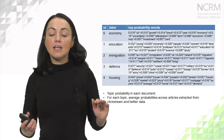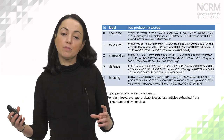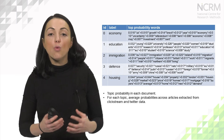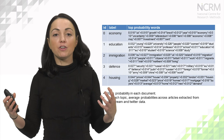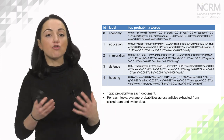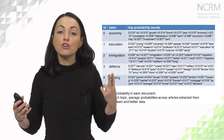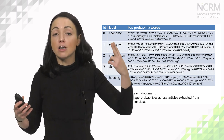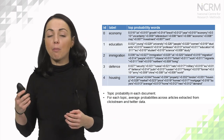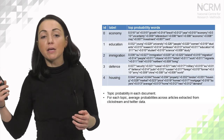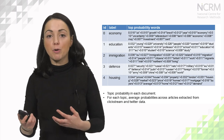We compute topic probabilities for each document and then for each topic we average those probabilities across documents — across the articles extracted from the clickstream and the Twitter data. We end up with two numbers: an average probability of a topic (say, the economy) in the clickstream data, and an average probability of the same topic in the Twitter data. These are the numbers we work with in the next part of the analysis.